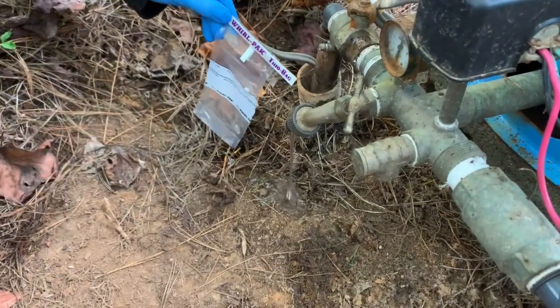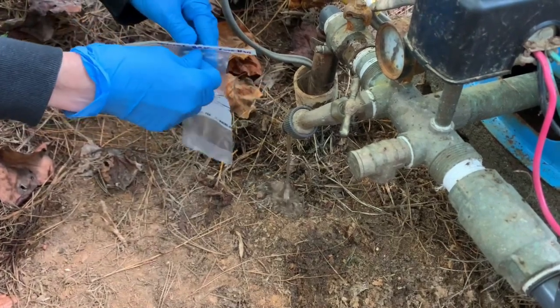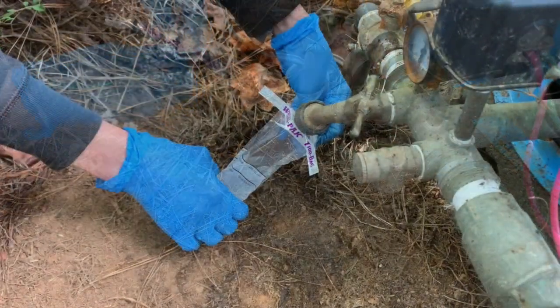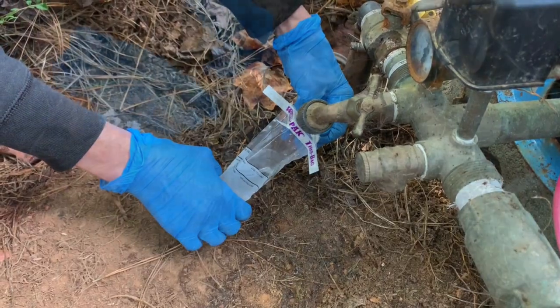To begin, collect a 100 milliliter water sample with the Whirlpack Thio Bag. Here we're collecting groundwater from a well.